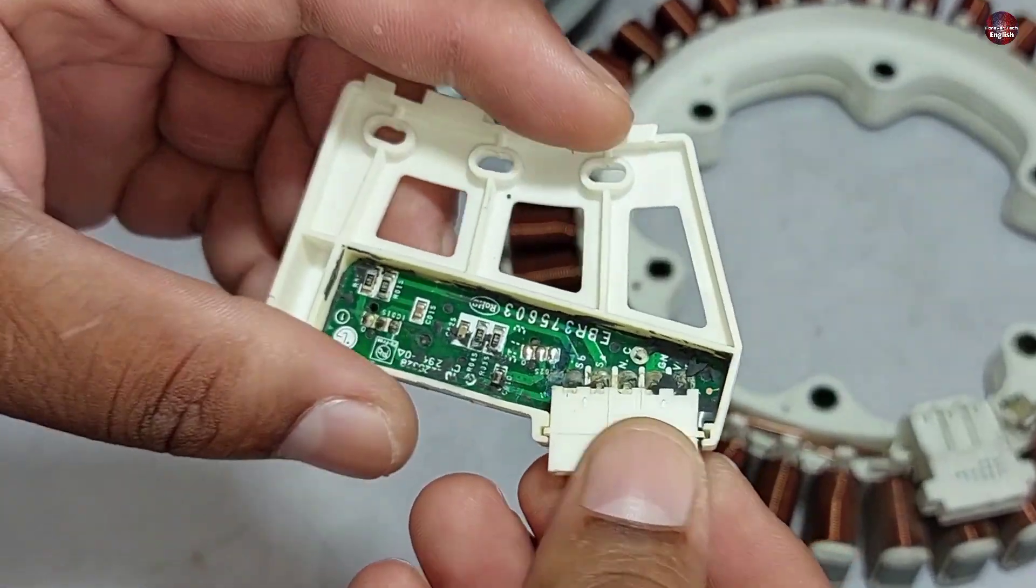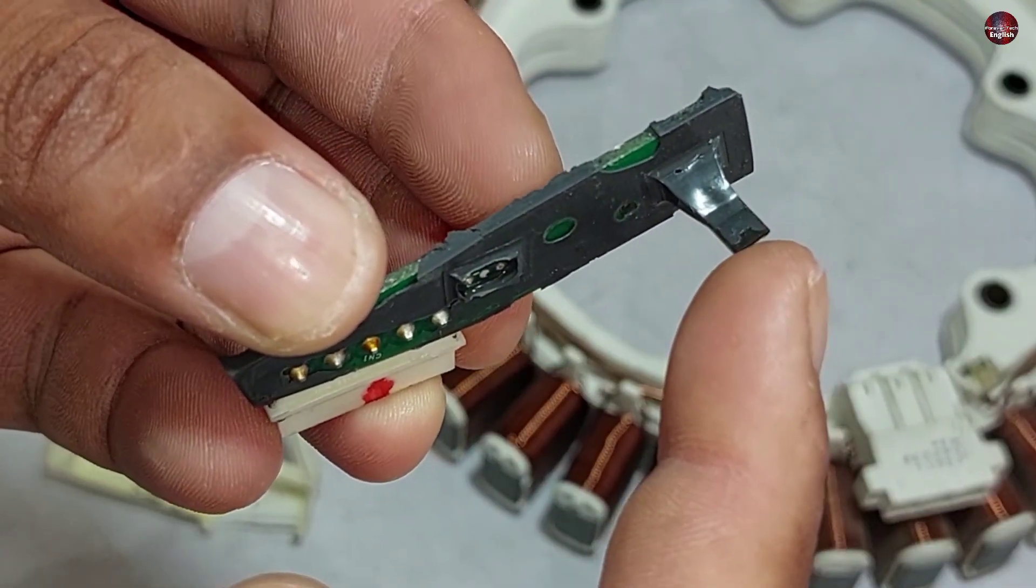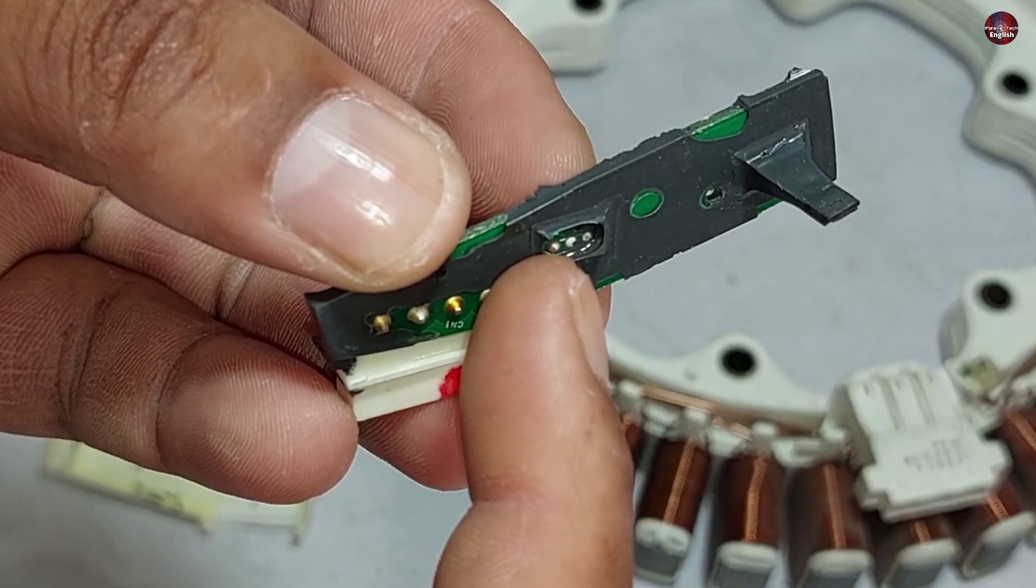This complete assembly is called a hall sensor, but a couple of sensors are installed on its circuit board, called hall effect sensors.